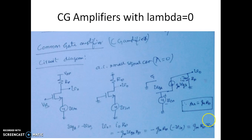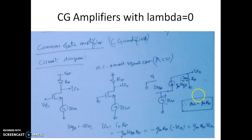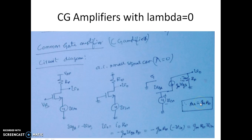The voltage gain of the CG amplifier is Gm·RD. This clearly shows that the output is in phase with the input signal — there is no negative sign, meaning there is no phase shift between the output and input waveforms. The magnitude of the gain is Gm·RD and the phase shift is 0 degrees. The magnitude is exactly the same as the CS amplifier, except the CS amplifier had minus Gm·RD whereas here it is just Gm·RD.